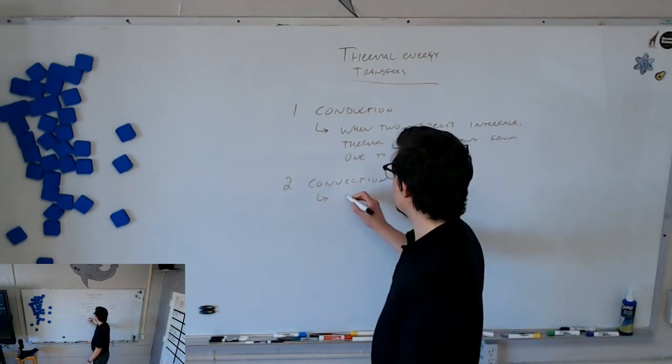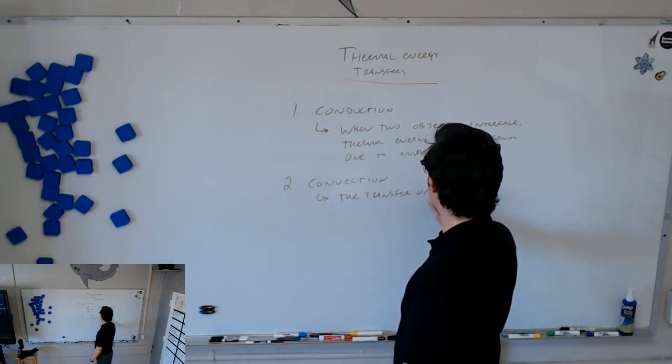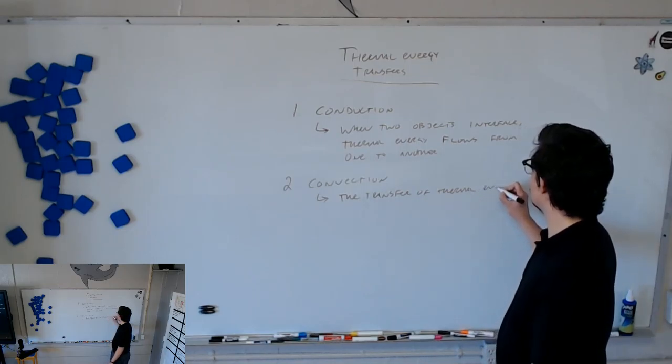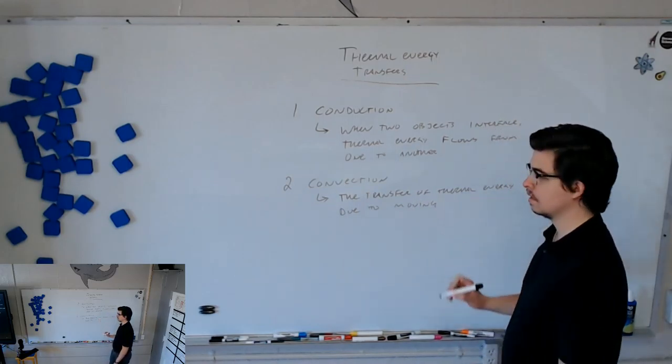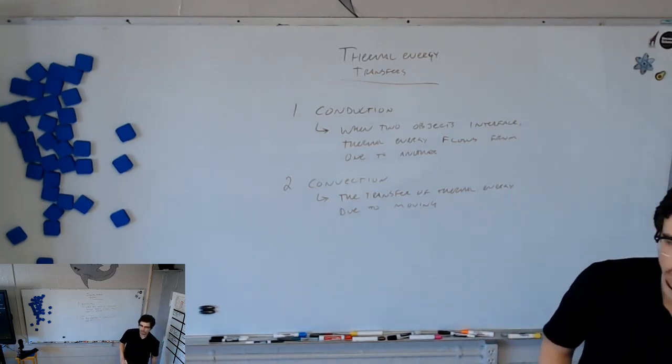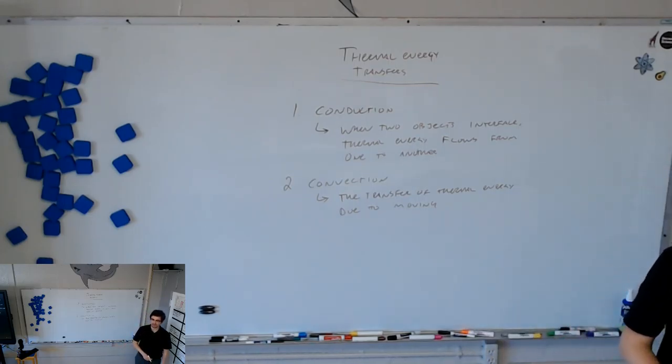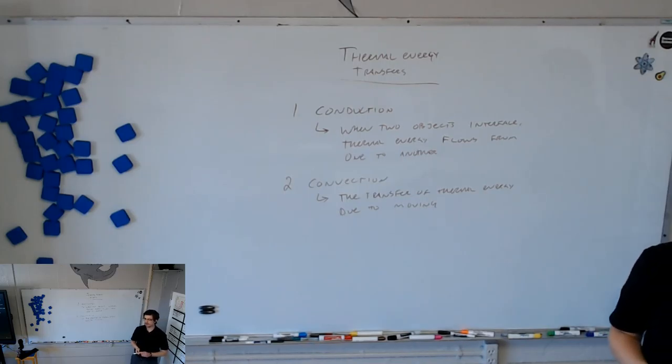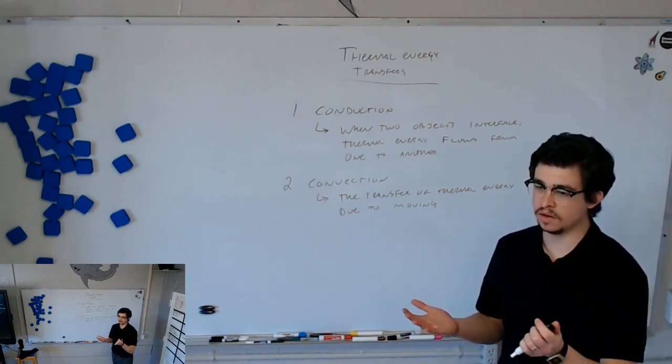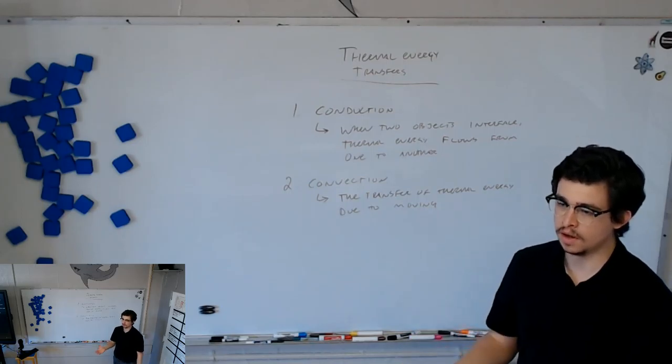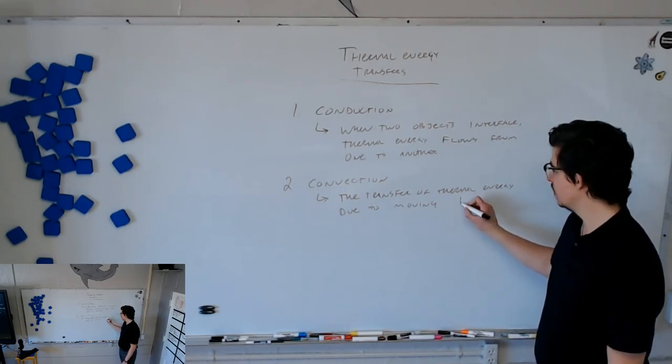This is specifically the transfer of thermal energy due to moving what? Usually circulating what, though? Moving atoms. Always air? It is always atoms, but that's too broad, and air is too specific. What else can convection occur in? It can occur in water. We talked about it in Earth's mantle, right? Specifically in the asthenosphere, it convects all the time. It's always moving in a circular path. So, in moving, due to moving what? Fluids. Fluids.